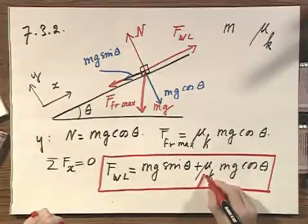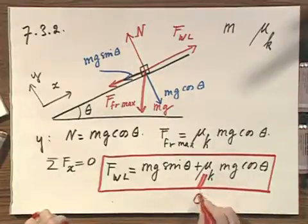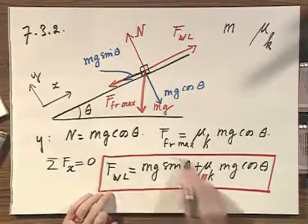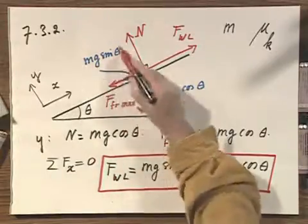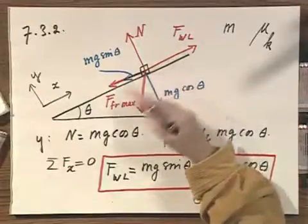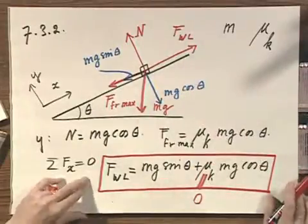I hope you notice that when you make mu k zero, that you find an answer which is completely trivial, which is an obvious answer, that the force that I have to apply would be exactly mg sine theta, which is a result, of course, that you must have seen many times in the past.